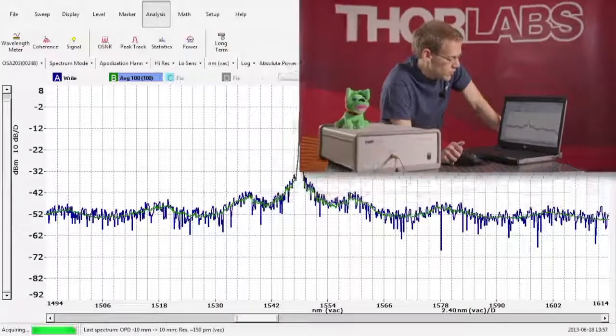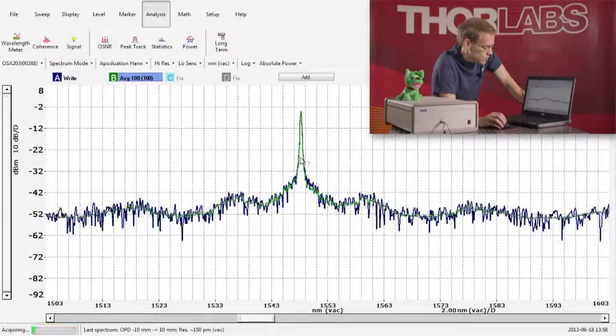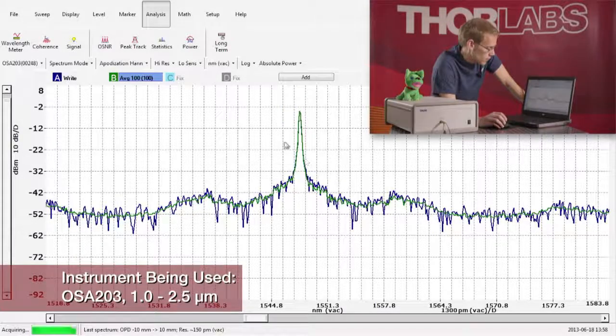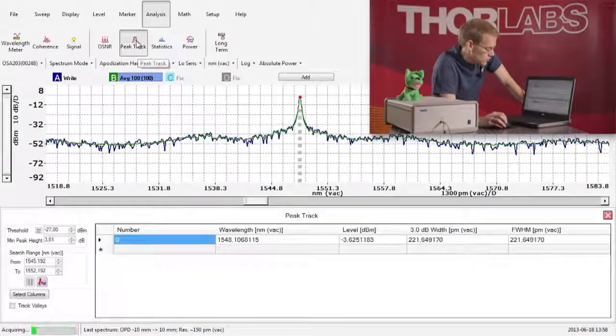Measuring on a narrowband source. For a narrowband source, we're usually very interested in characterizing the line width of the source. This can be done with the peak track function.